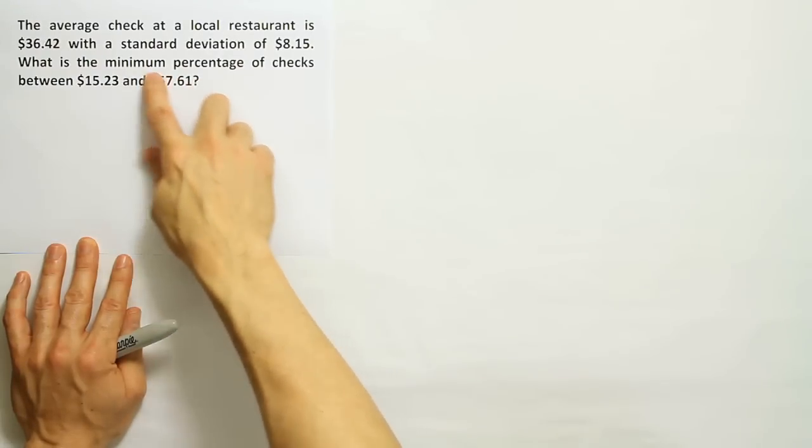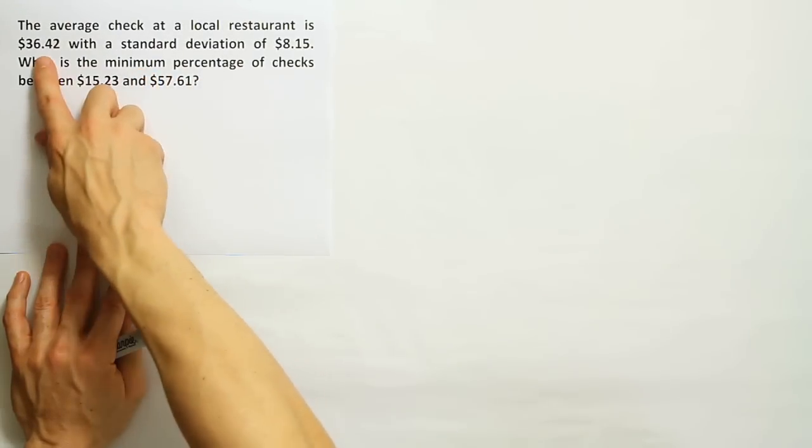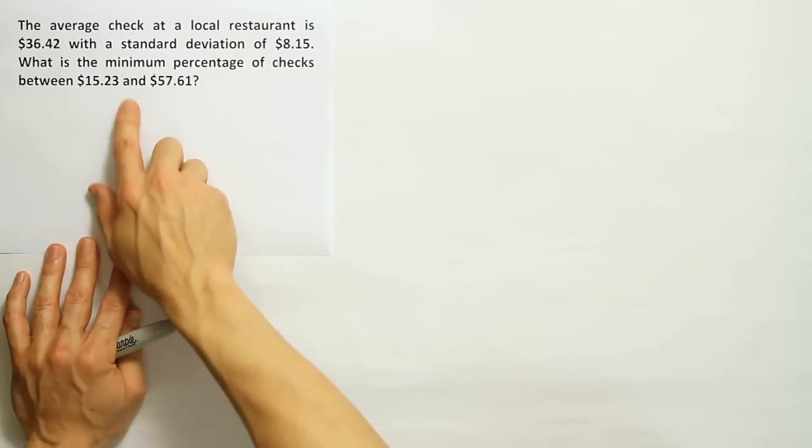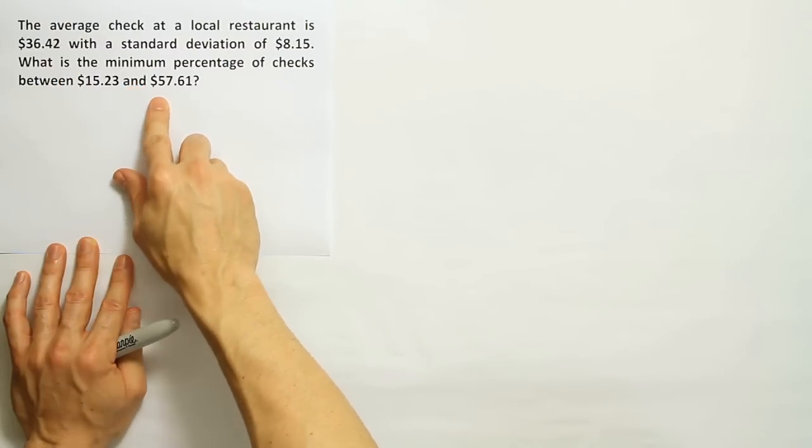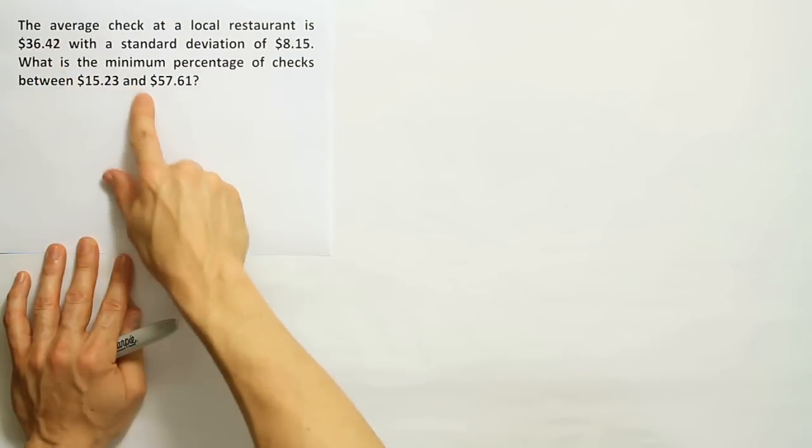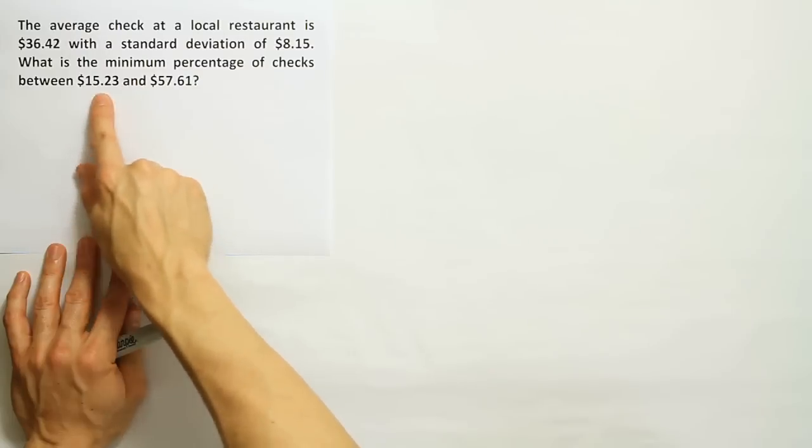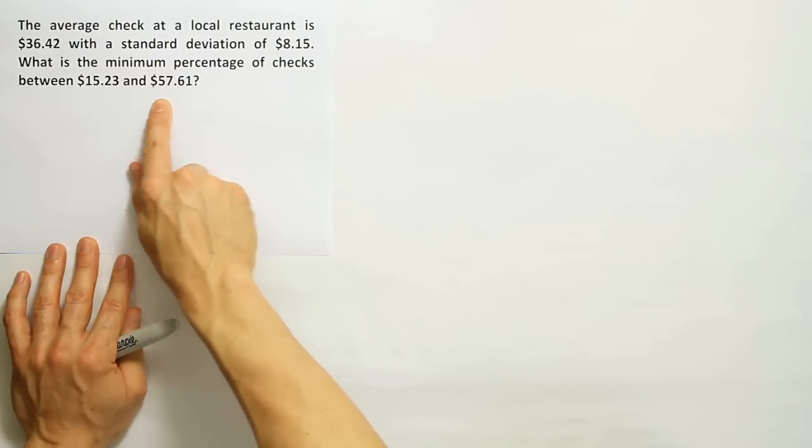Chebyshev's theorem requires that the interval that we use is symmetric around the mean, meaning the mean is directly in the center of the interval. And I bet if we check that we'll see the mean is definitely in the center of these two numbers on the number line.